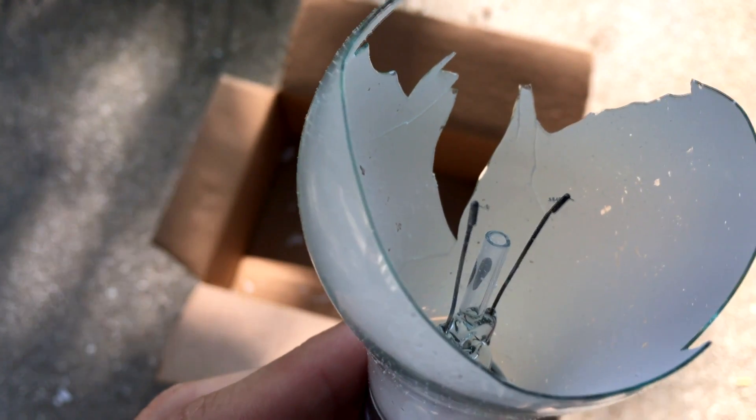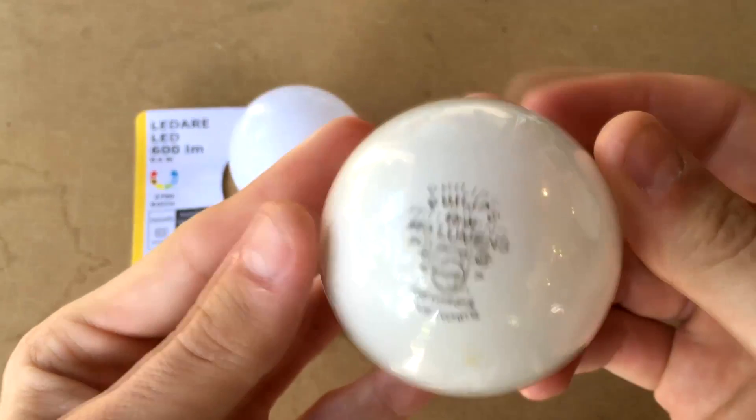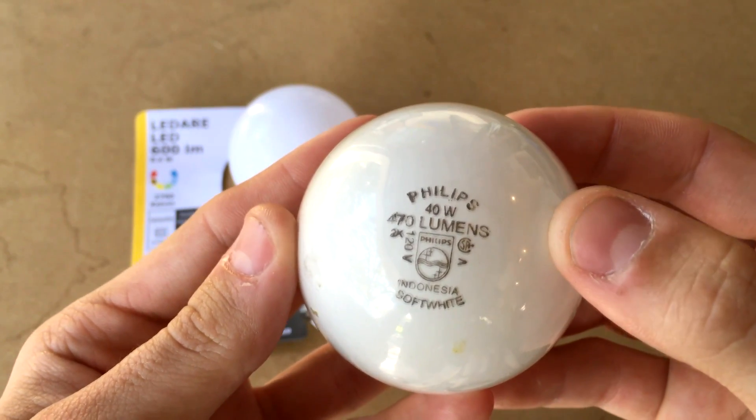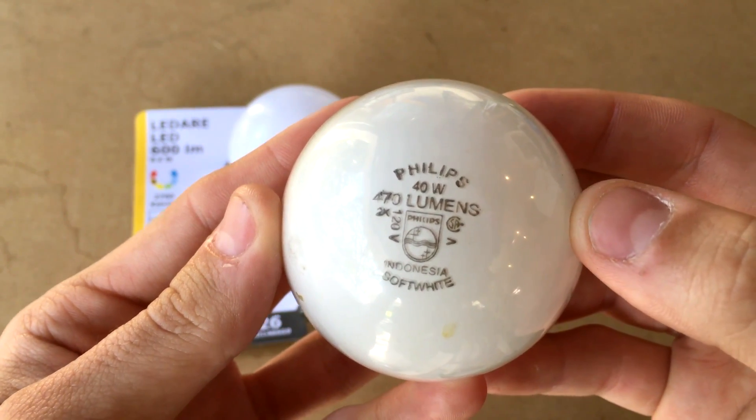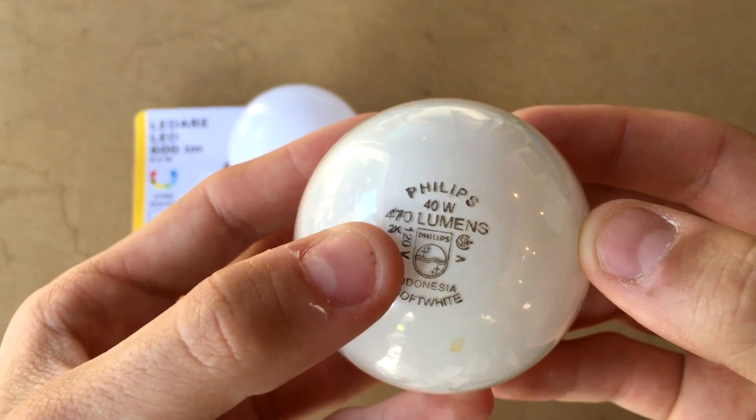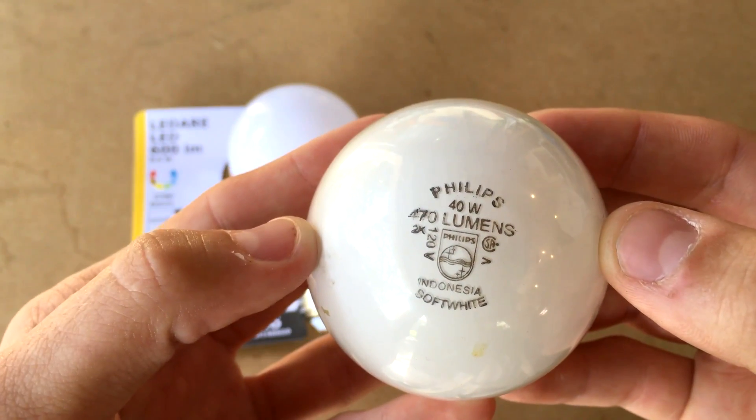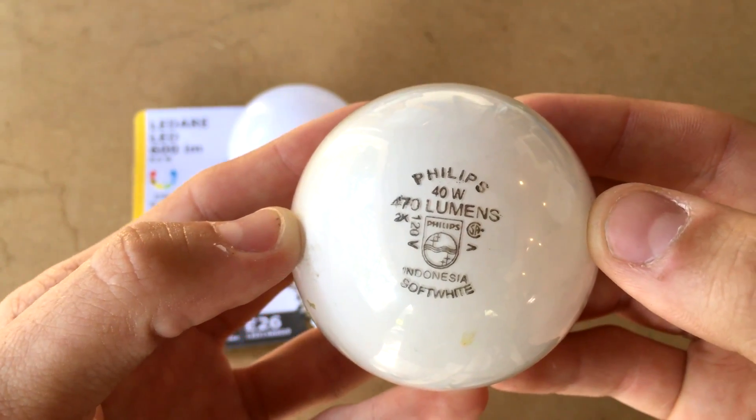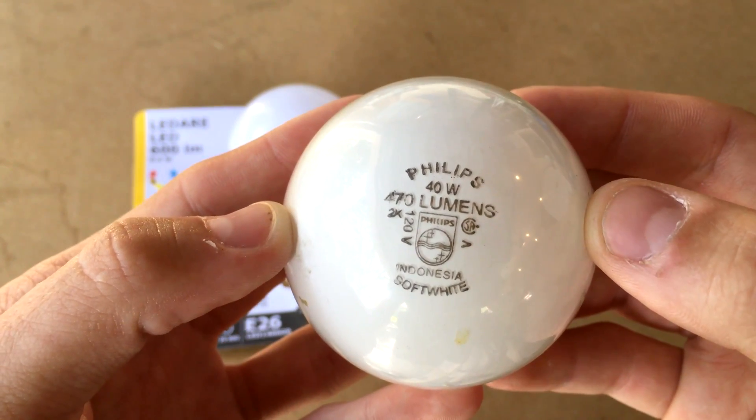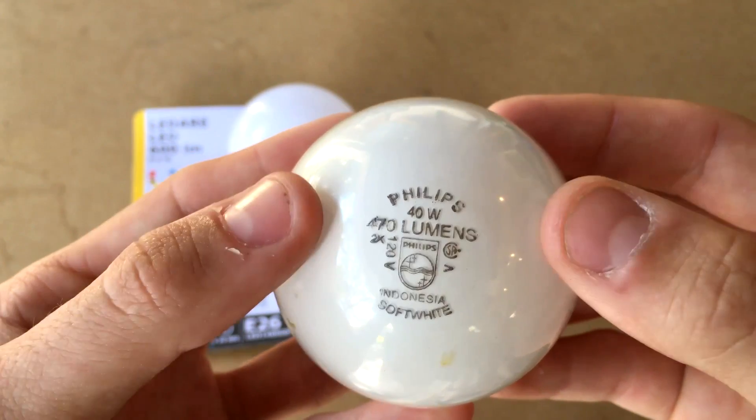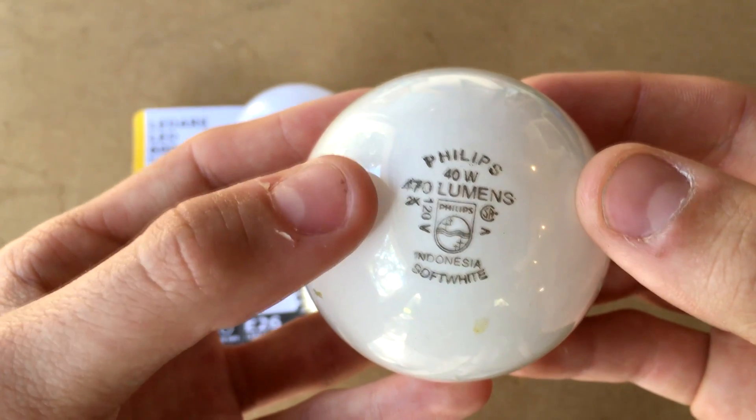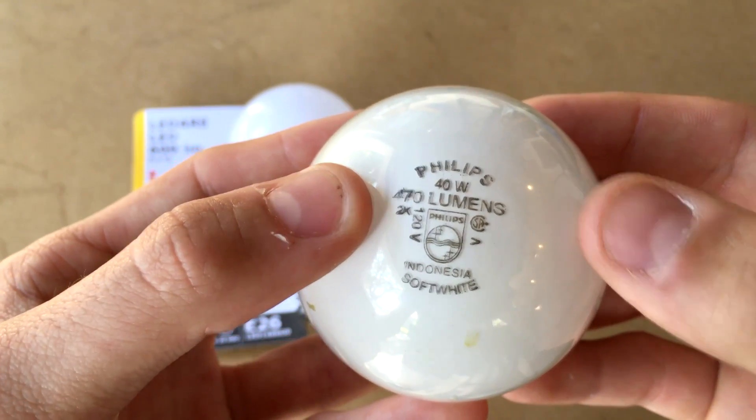If we look at the numbers on the light bulb, you can see right here it's a Philips bulb and it says 40W. 40W means 40 watts, and below that you can see 470 lumens. Lumens are a measure of the light put out by a light bulb. So this light bulb uses 40 watts of power to produce 470 lumens of light.